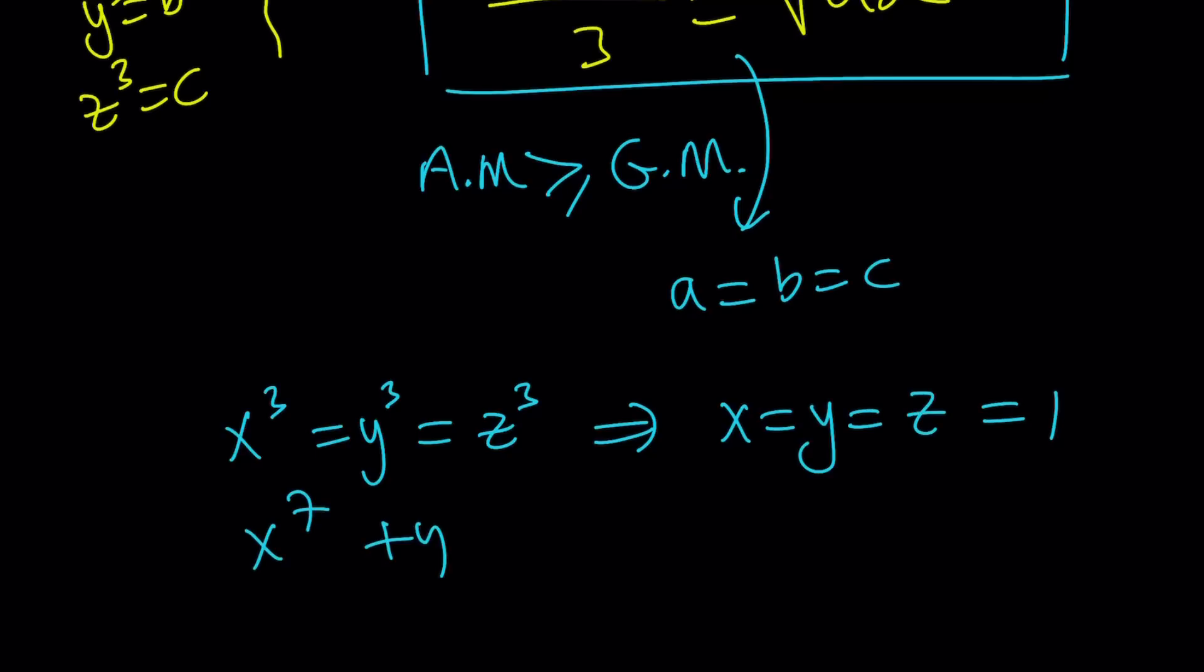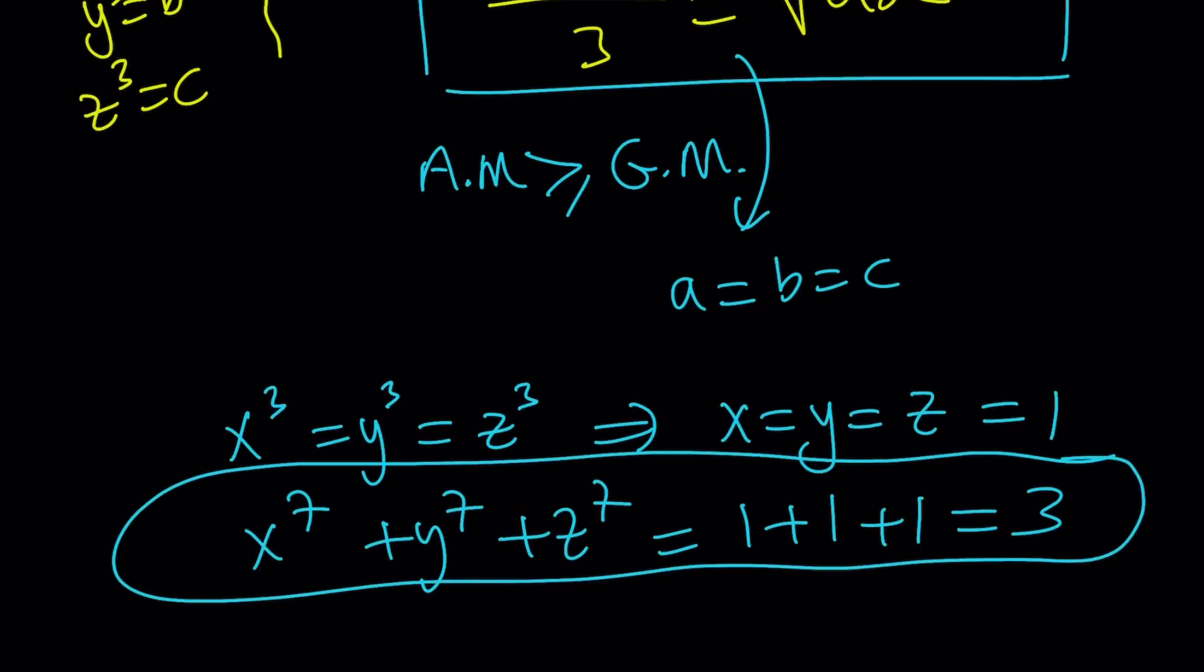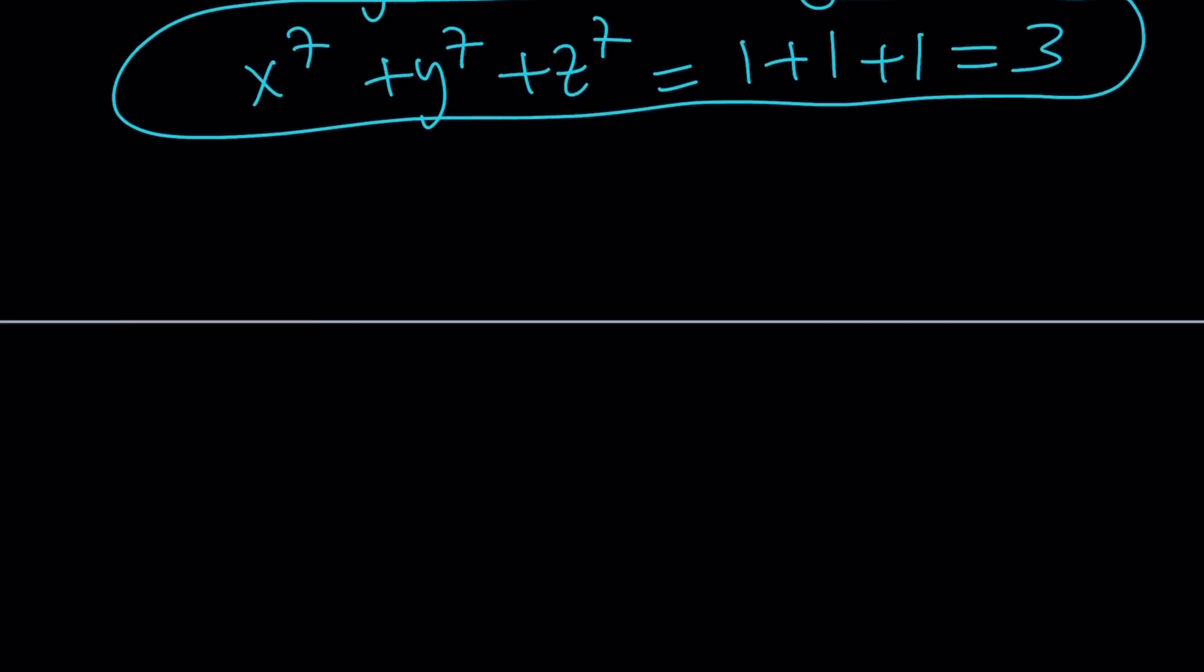So x to the 7th plus y to the 7th plus z to the 7th is actually 1 plus 1 plus 1, and that is equal to 3. It's as easy as 1 plus 1 plus 1. Isn't that awesome? Yeah, after all these algebraic manipulations, sure. Let's take a look at the second method. Obviously, that is going to be nicer, I promise.